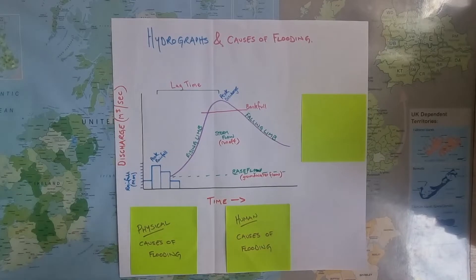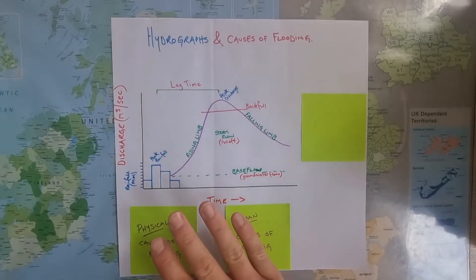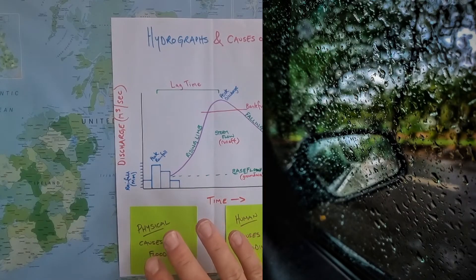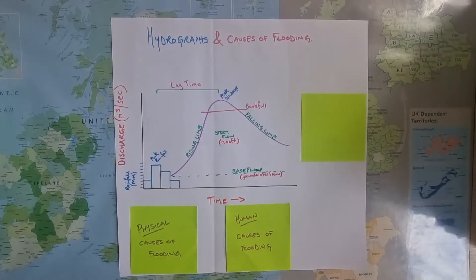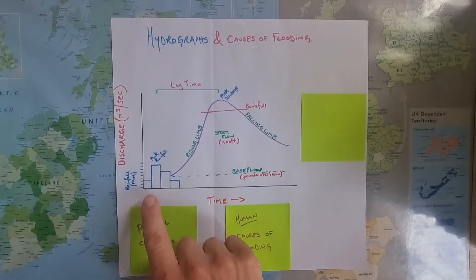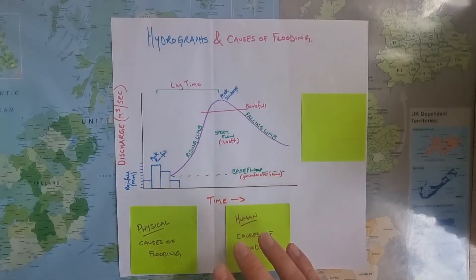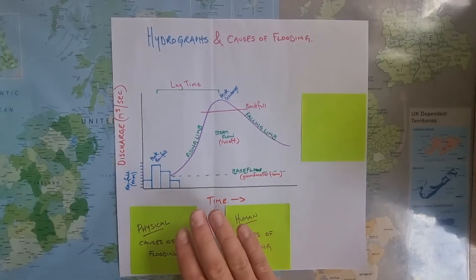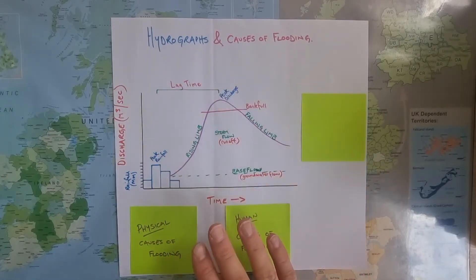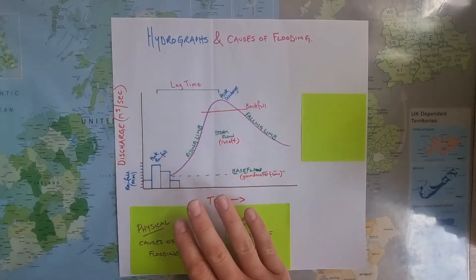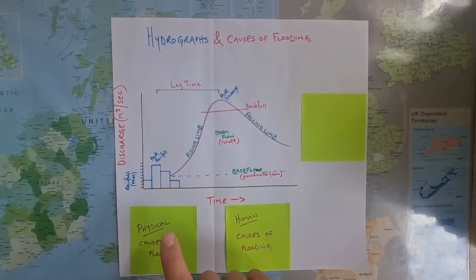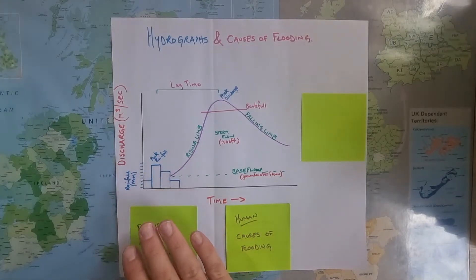There is quite a bit of terminology to learn to help you access the hydrograph fully. I'll use some of it here, but you can use your textbook to fill in any gaps. Referring first to the blue bars, this is the rainfall or storm event. We imagine that it has rained heavily for perhaps four hours — you can see four bars here. Then it stops raining. The term peak rainfall is used to describe the moment when the rainfall is most heavy during that storm.